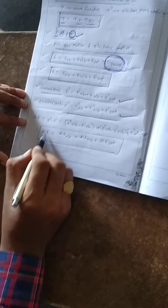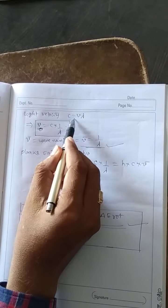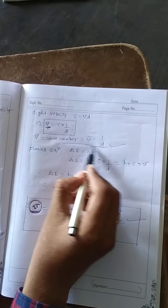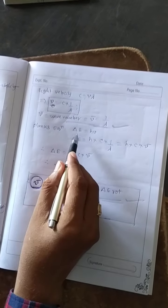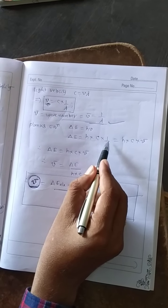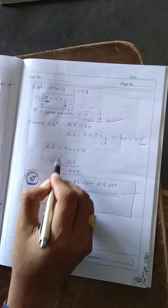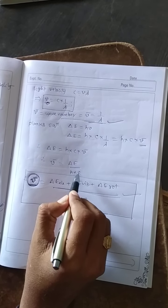The change in energy delta E: light velocity c equals nu lambda, nu equals c into 1 by lambda, where 1 by lambda is wave number. Using Planck's equation delta E equals h nu, substituting c into 1 by lambda, the final relation is mu bar equals delta E by h into c.